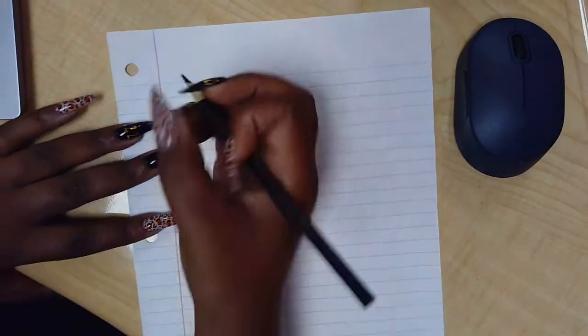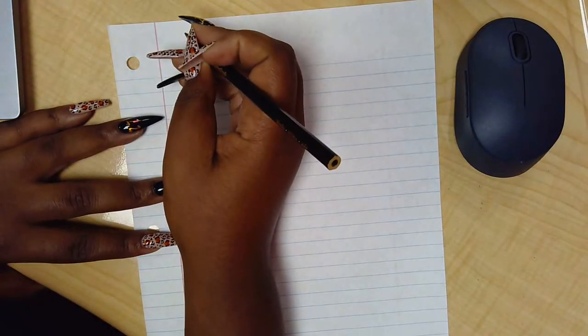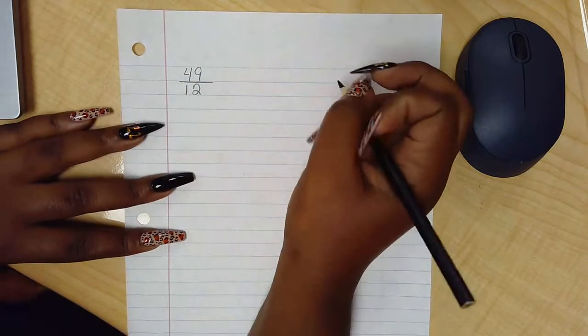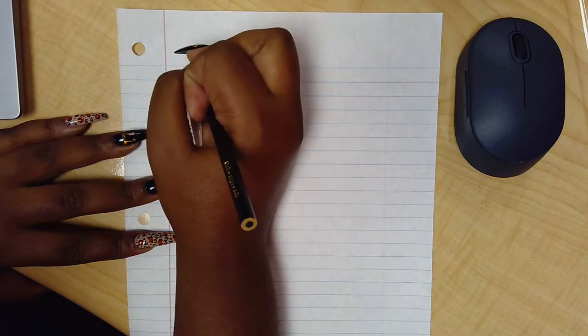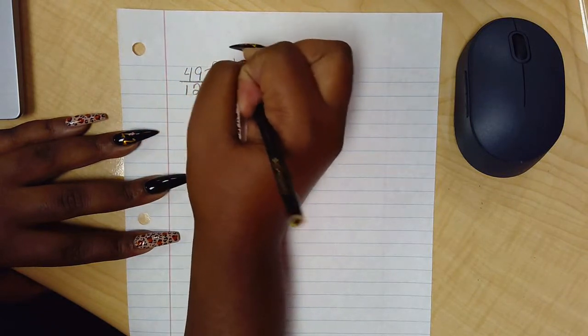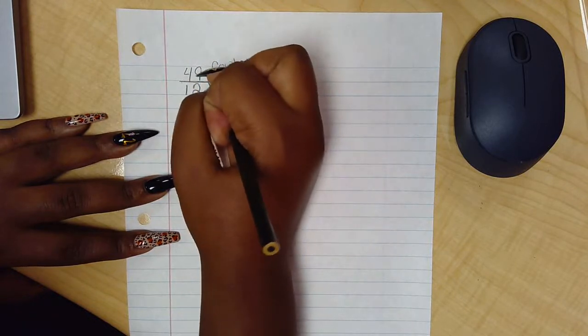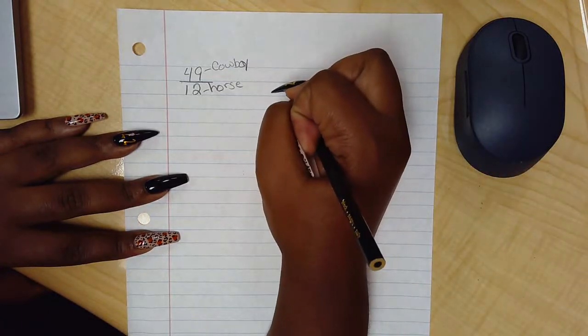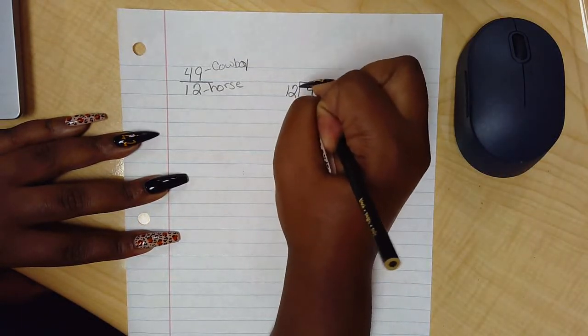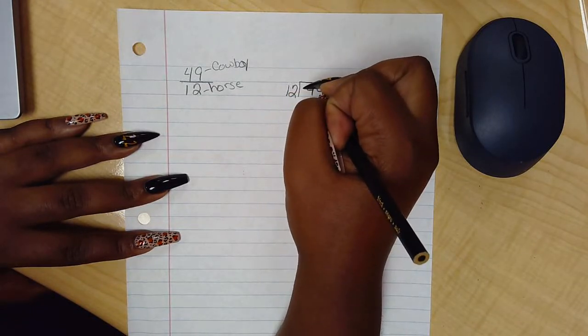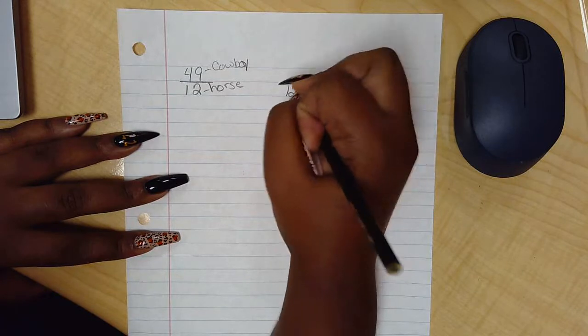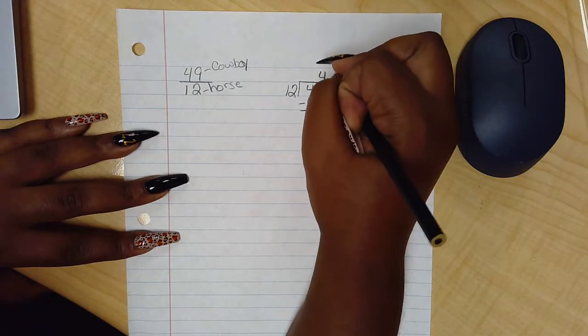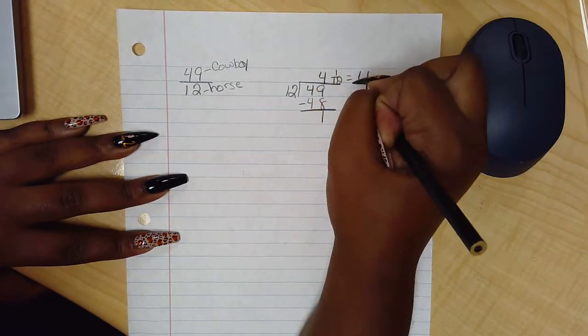One example we're going to do is 49 over 12. This is my cowboy, this is my horse. The horse stays outside, the cowboy is inside. I know 12 going into 49, four times. 4 times 12 is 48, and I subtract. I have 1. So this remainder is 1/12, so my fraction is 4 and 1/12.